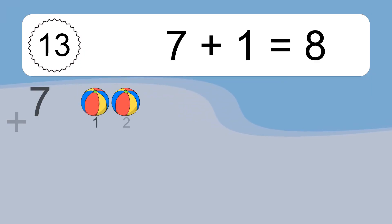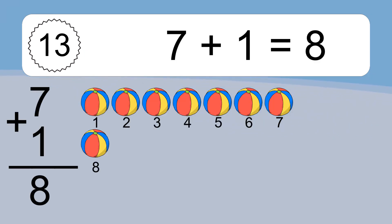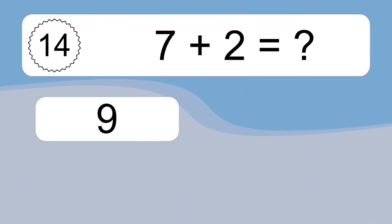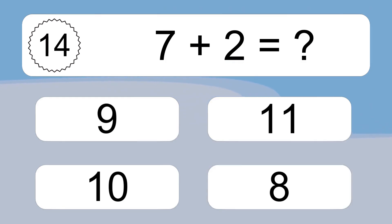7 plus 1 equals what? 7 plus 1 equals 8. Let's count it: 1, 2, 3, 4, 5, 6, 7, 8.